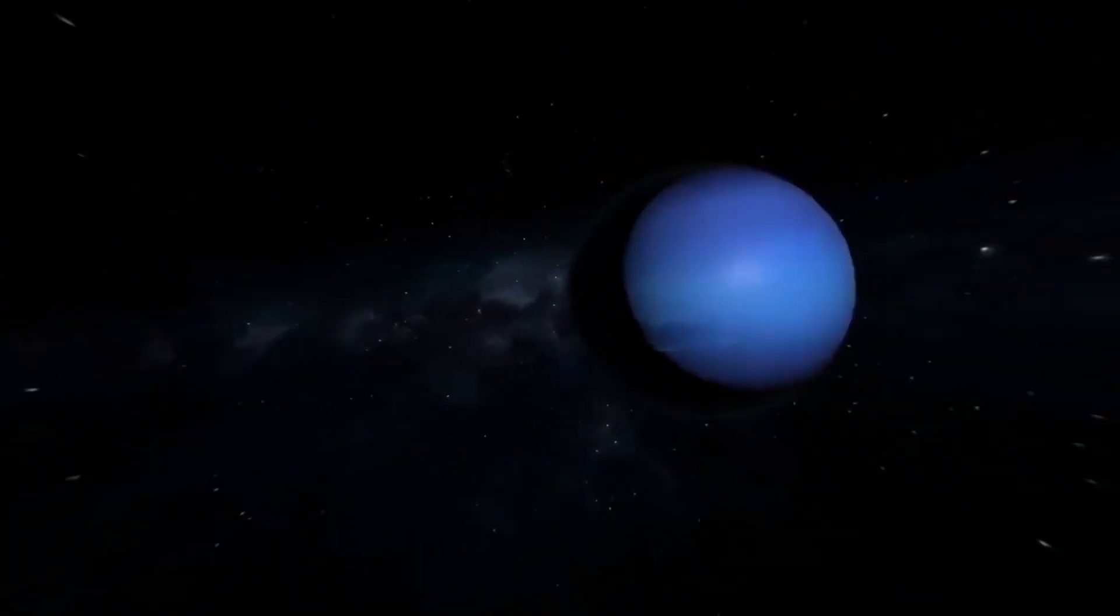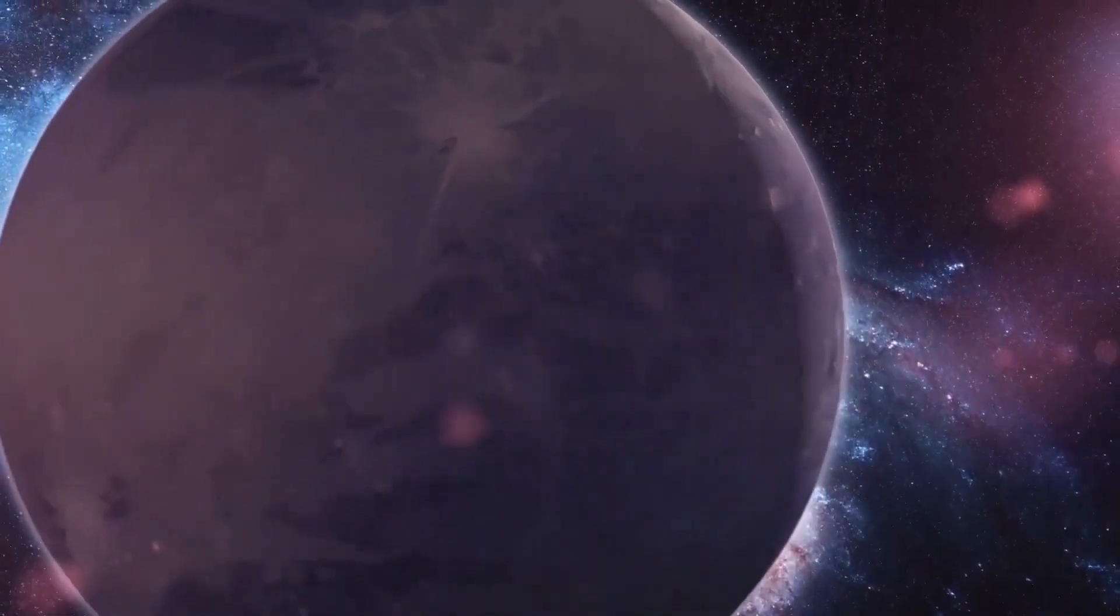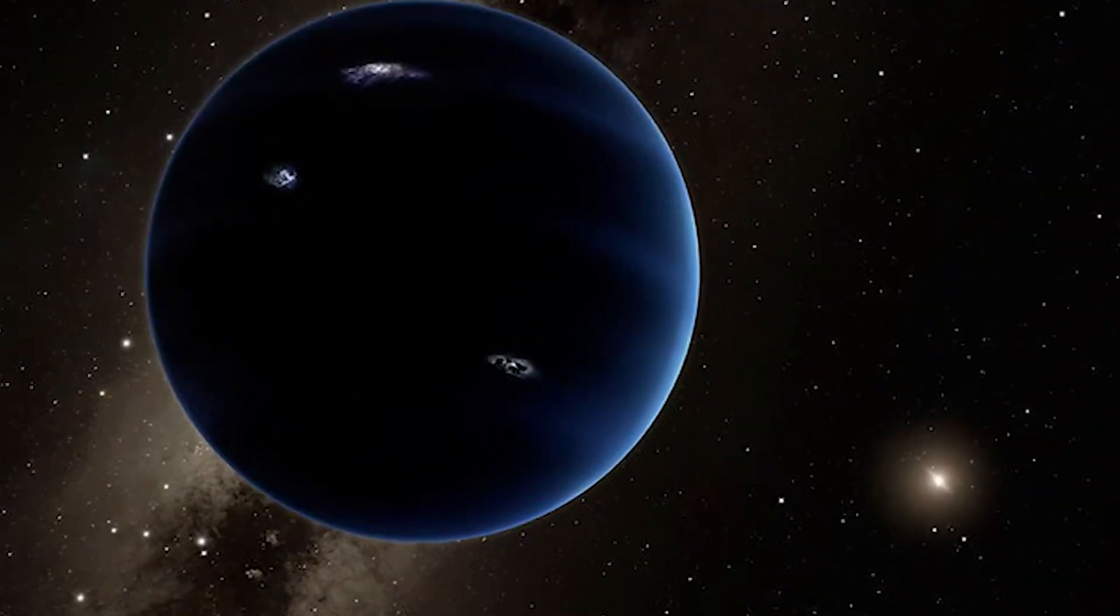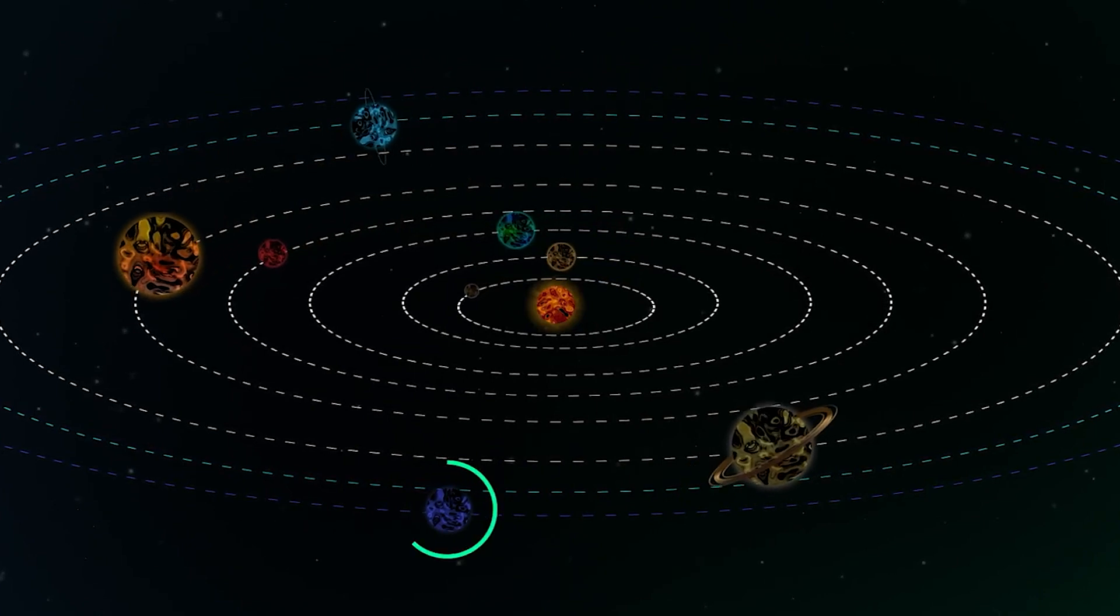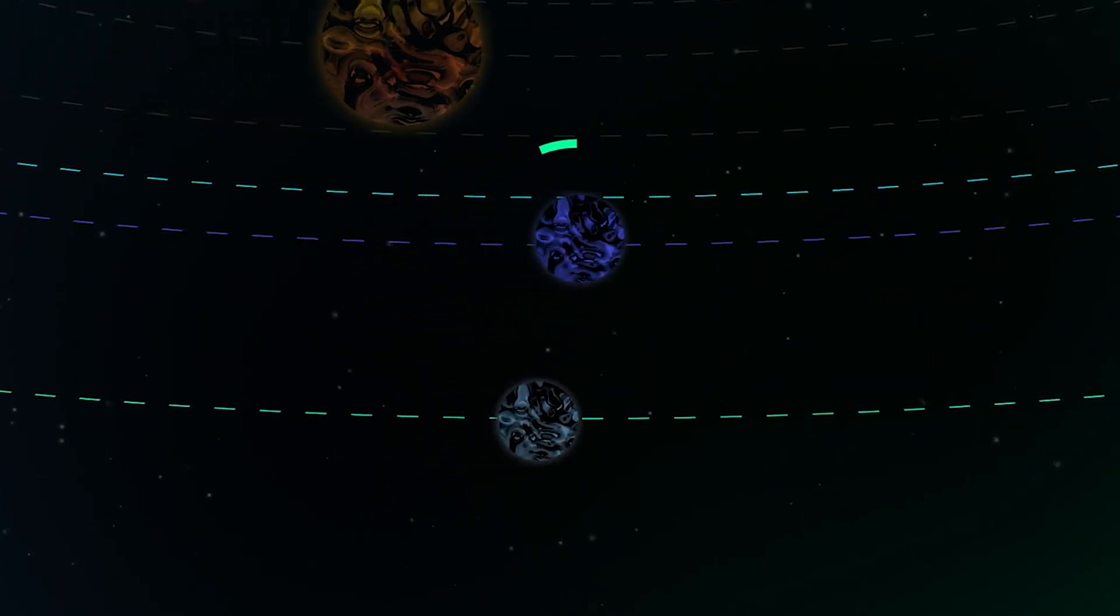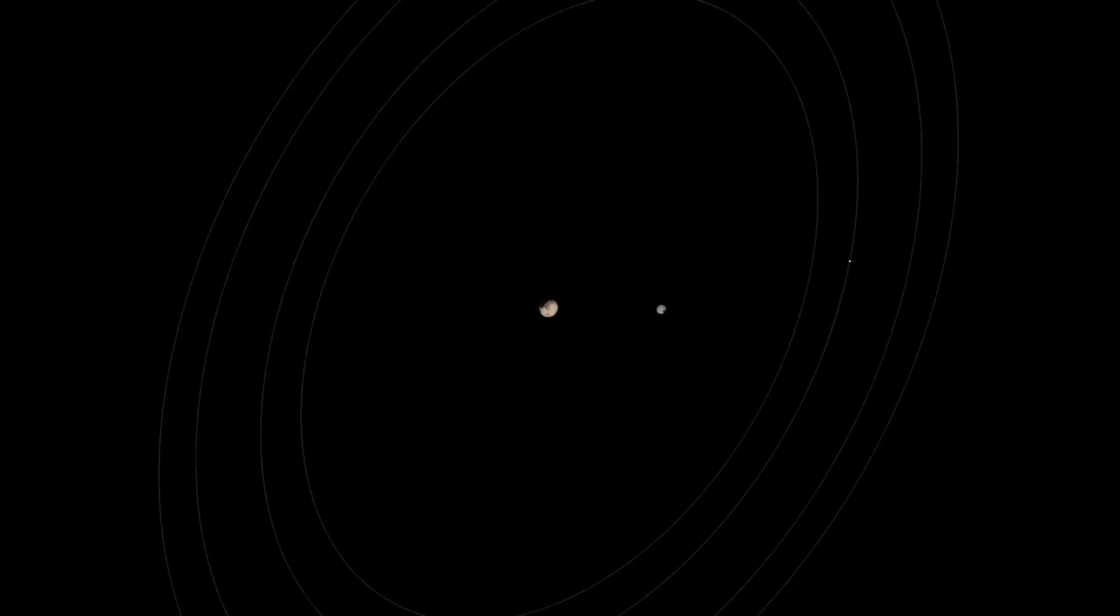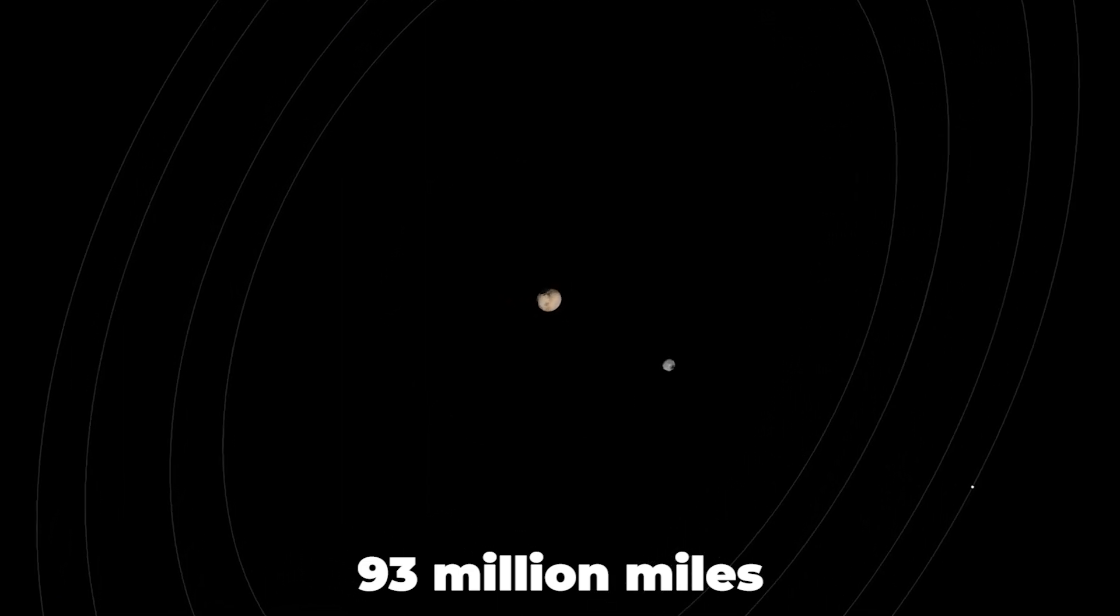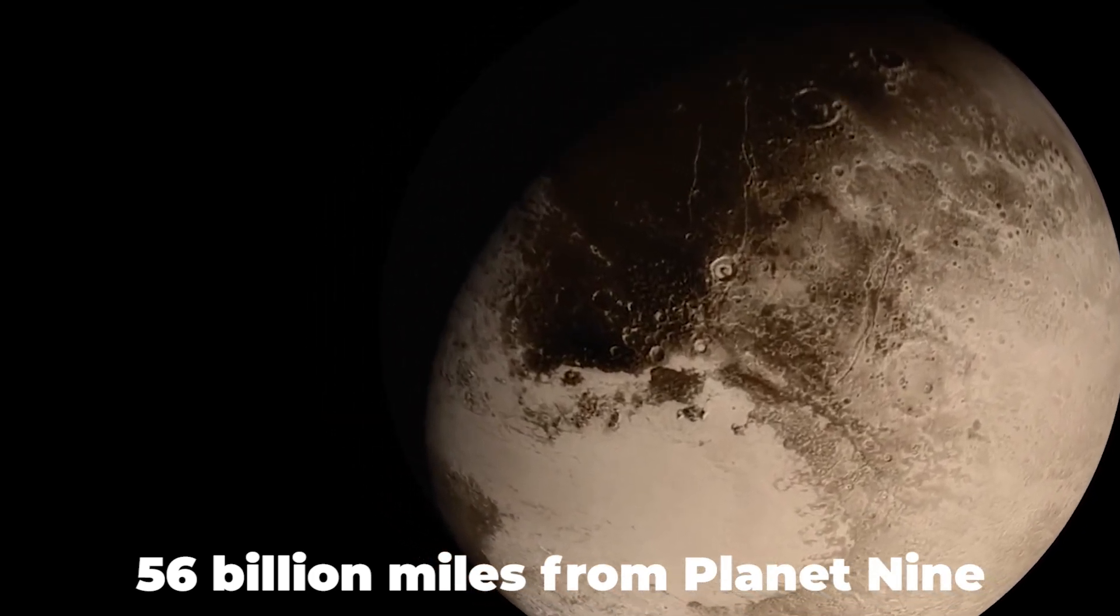According to the simulations created by Batogin and Brown, Planet 9 should be 20 times further from the sun than Neptune on average. Neptune orbits the sun at a distance of roughly 2.8 billion miles, where the sun is considerably fainter. Our little blue planet orbits the sun on average at a distance of 93 million miles.